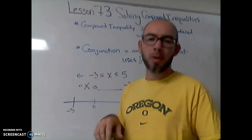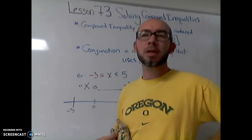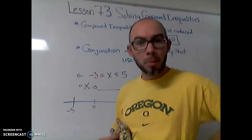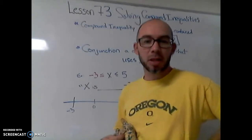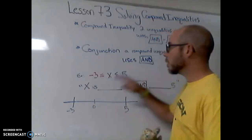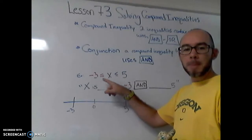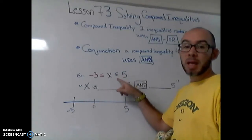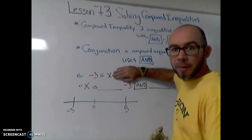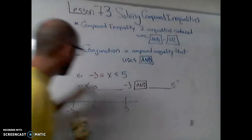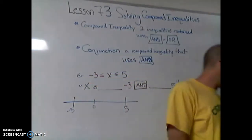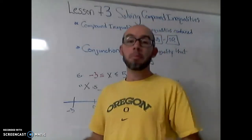In grammar class we'd be singing that song: 'Conjunction Junction, what's your function? Connecting words and making phrases and clauses — and, or, but, nor, for, yet.' But conjunctions in math involve two inequality expressions at the same time. For example: negative three is less than or equal to x, which is less than or equal to five. Here's one inequality, and here's another one, and we need to find where both are true at the same time.